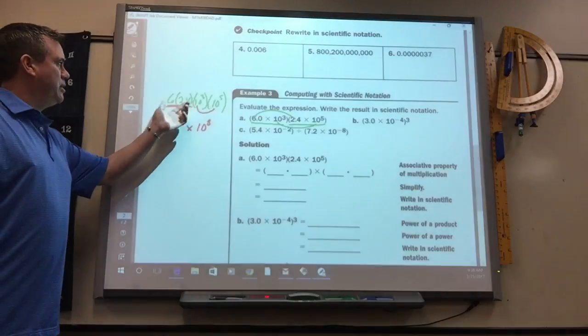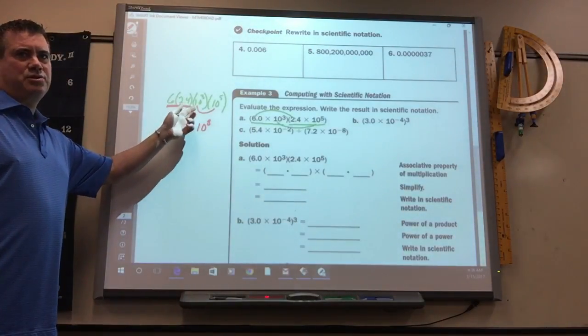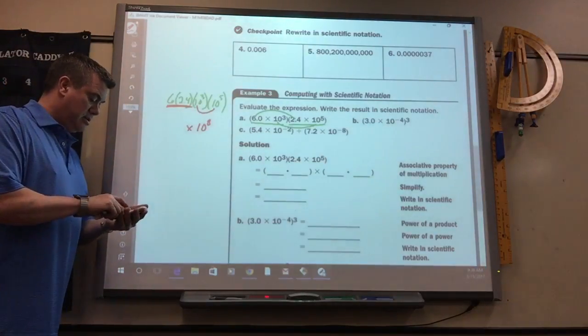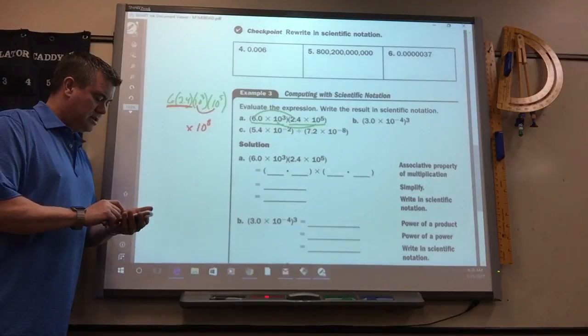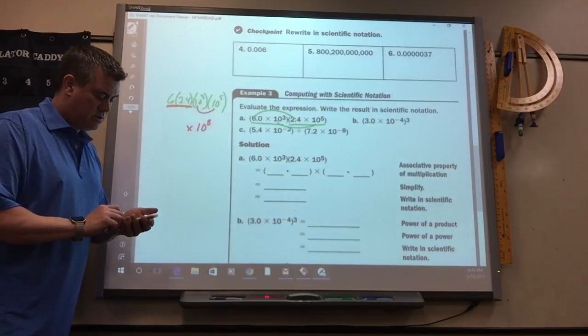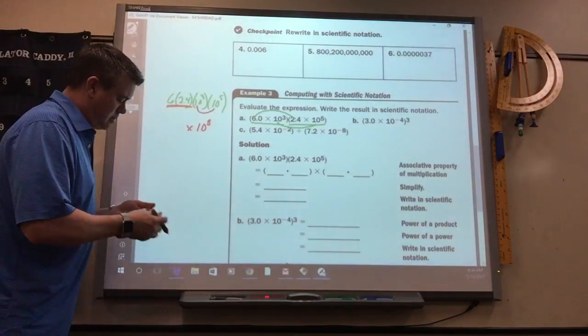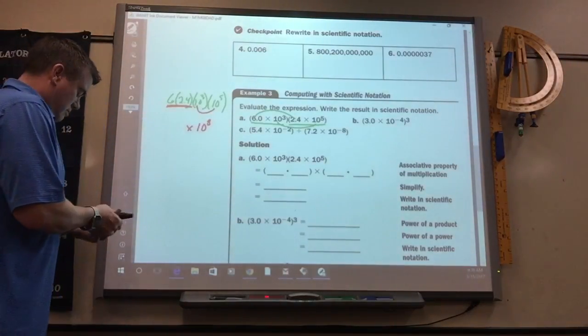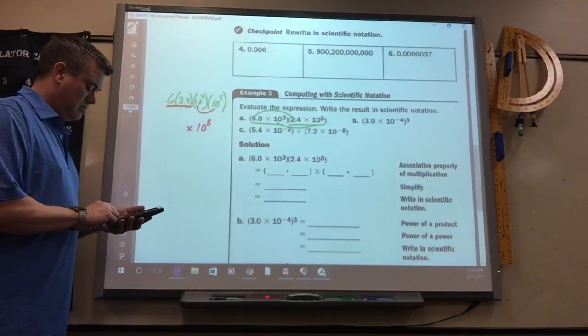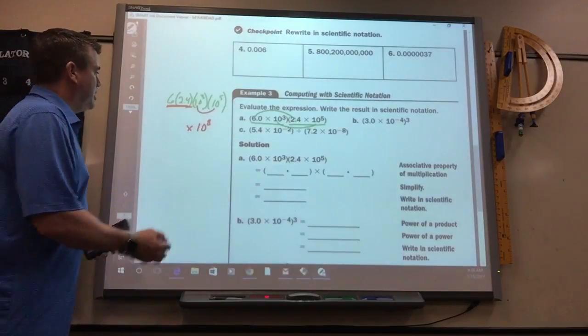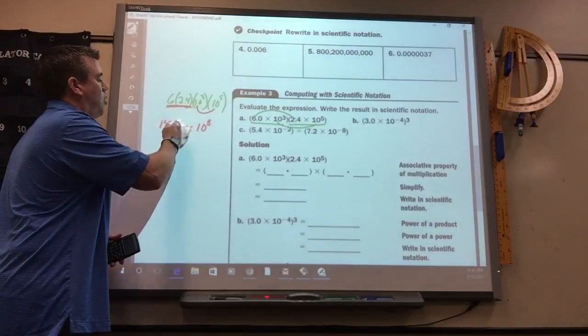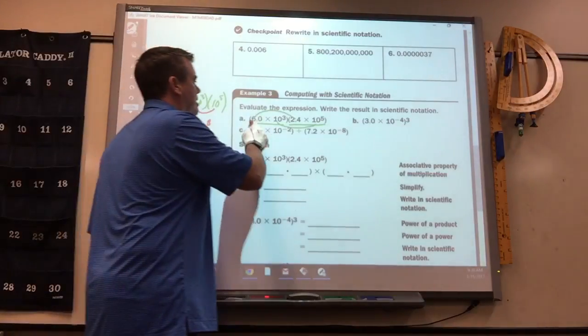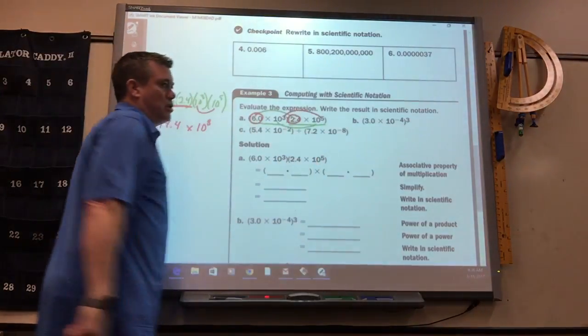So again, usually they would give you just two numbers, like 6 times 2. It would be easy to do without a calculator. But 6 times 2.4 is 14.4. Okay? So that's not so tough. All you've got to do is multiply these two, and then use your exponent rules for those.